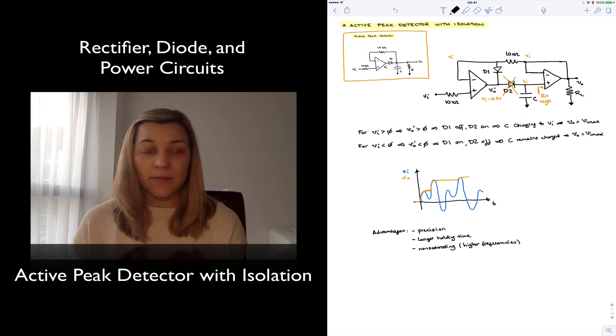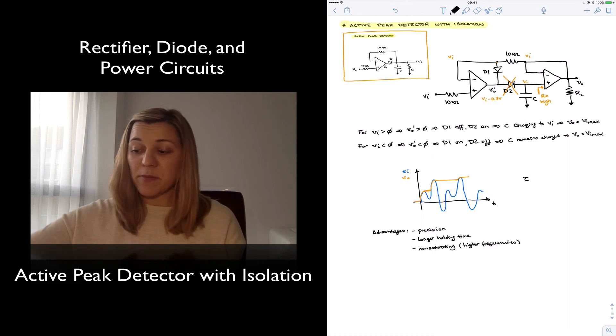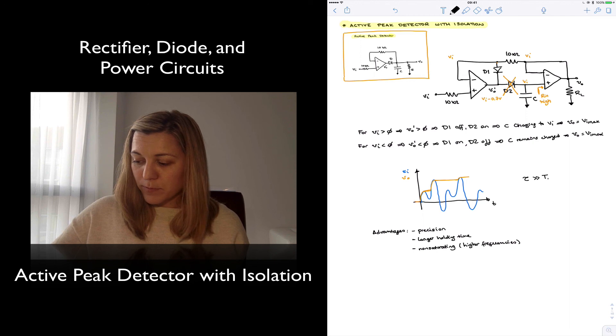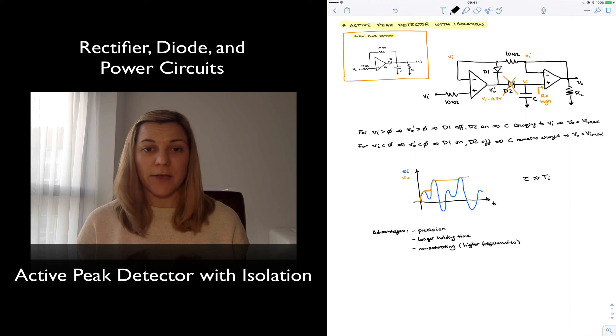We still are limited in terms of constraining our circuits in the sense that that capacitor, even though slowly it will discharge eventually. And so we do want, we still want our time constant for the circuit, which is equal to RC. In this case, the equivalent resistance seen by the capacitor is going to be the input resistance of the op-amp. We still want the discharge time to be much longer than the period of the input signal. And so Tau much greater than the input period Ti. Thank you.